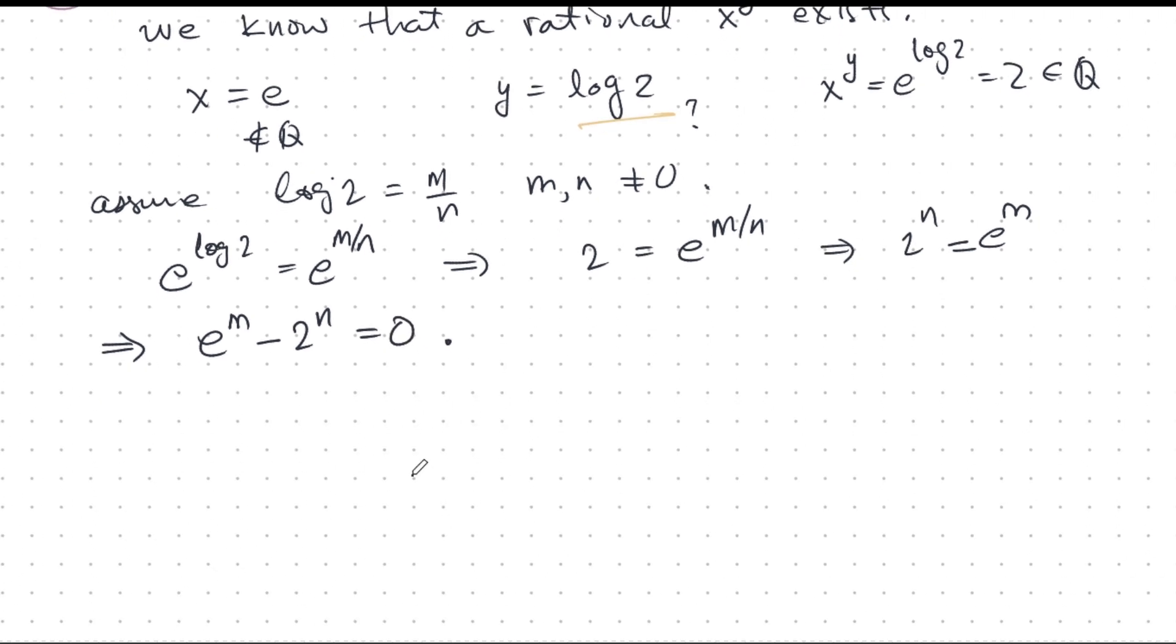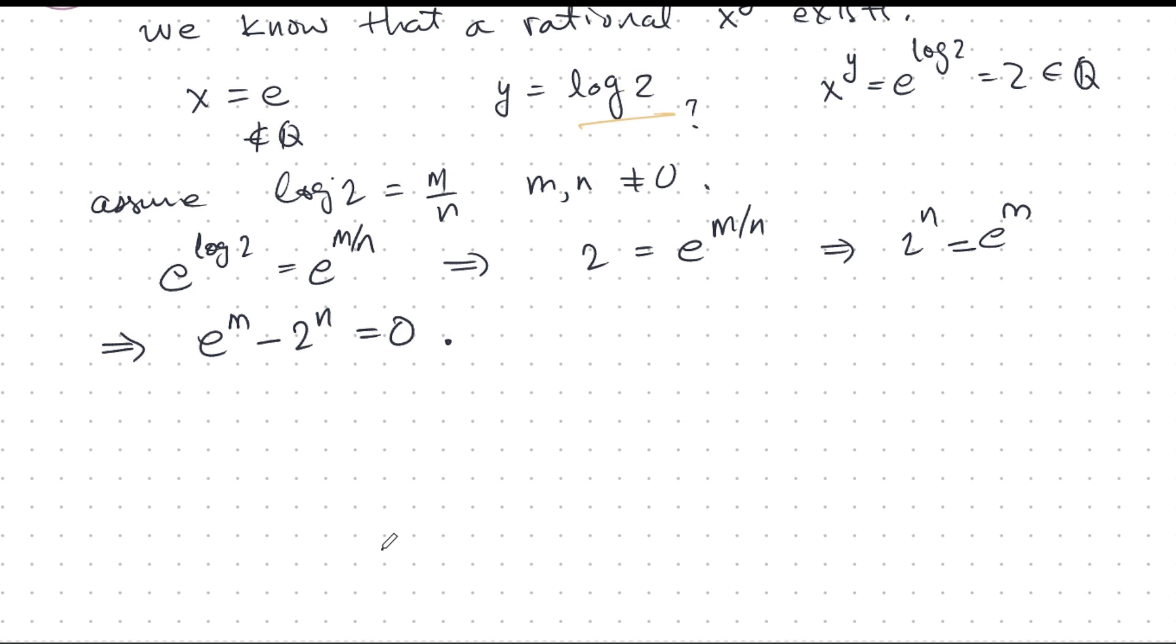So what did I gain here? Well, we did gain something. It seems that e is a root of an algebraic equation, u power m minus 2 to the n equals 0 for some powers m and n. And that means e is an algebraic number.